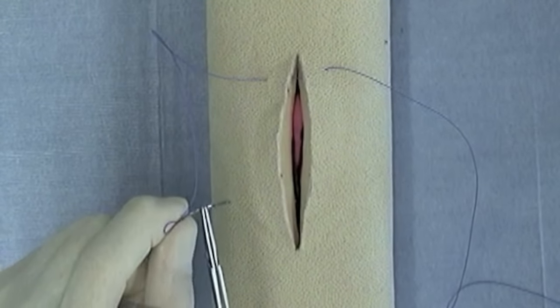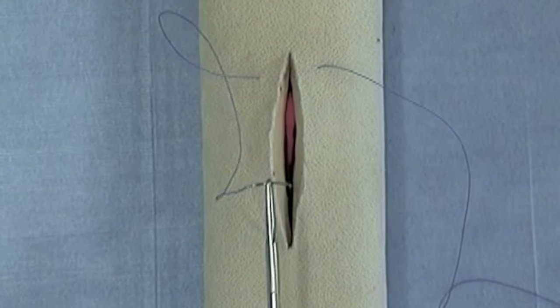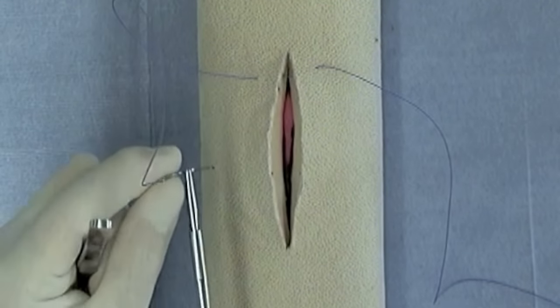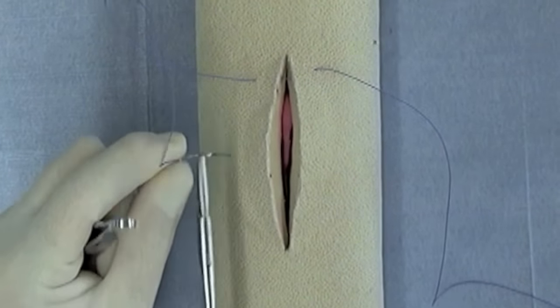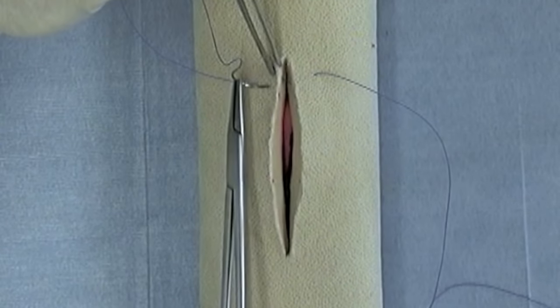So the first suture bites are taken in a forehand direction. You then reverse the needle, set it at a similar location on your needle holders, and then you're ready to do the near bites.